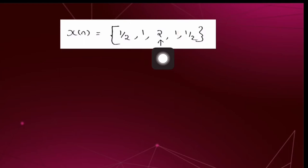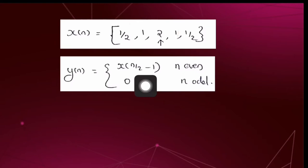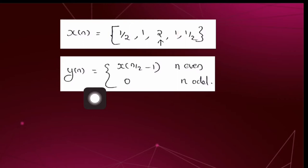The origin of x[n] is indicated by an arrow symbol, which means the value of x[n] at n = 0 is 2. In the question, y[n] is given as x[n/2 − 1] for n even, and 0 for n odd. We are asked to find out the graphical representation of y[n], and for that we first have to obtain the value of y[n] for different values of n.